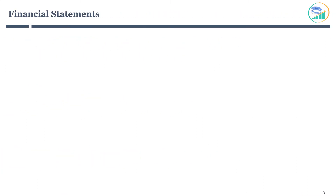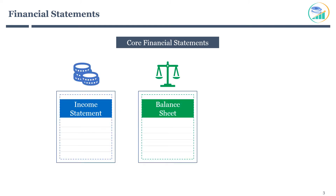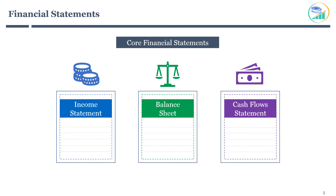Now you know when and where to find company financial statements. Let's learn about what the different financial statements are. There are three core financial statements: the income statement, the balance sheet, and the cash flows statement. Each statement serves a specific purpose, and together they contain significant information about a company's financial health. I will cover the details of each statement in later sessions. In this session, let's get introduced to each statement to develop a high-level understanding.